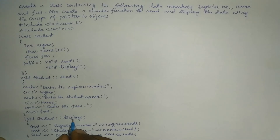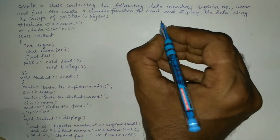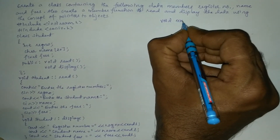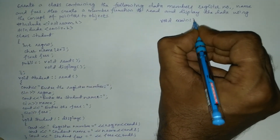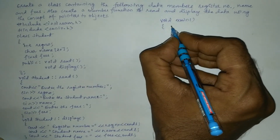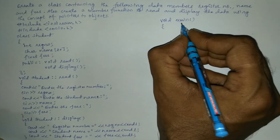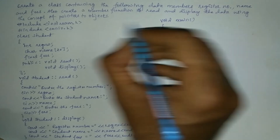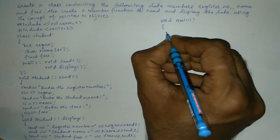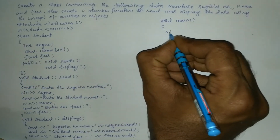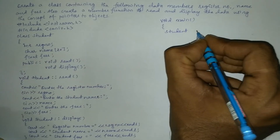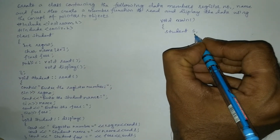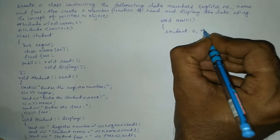Now we write the main function. Execution of a C++ program always starts from the main function. Inside main, we create an object of the student class — we write student s, which is a normal object.